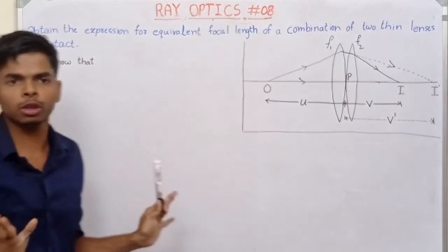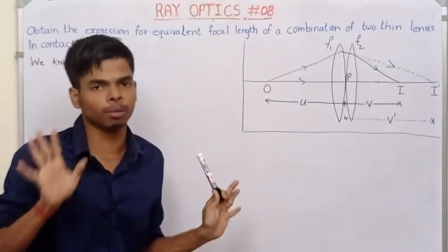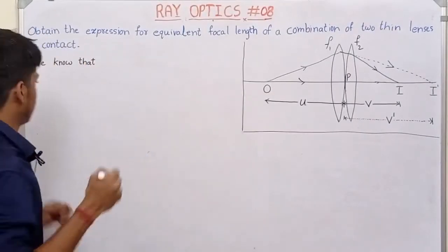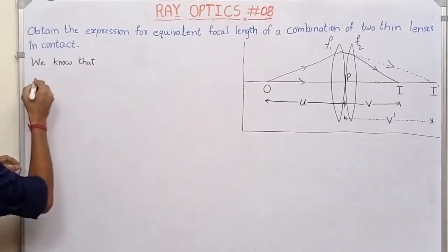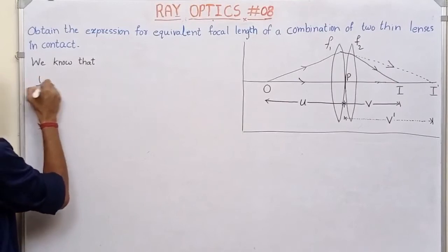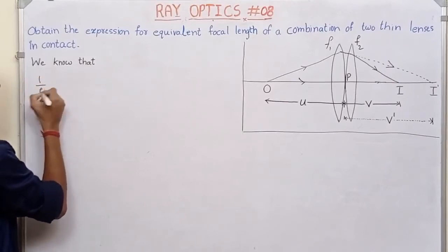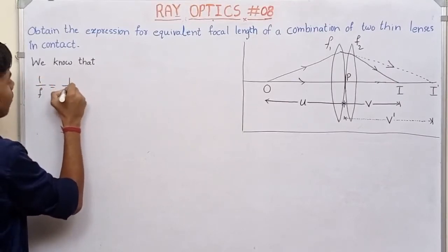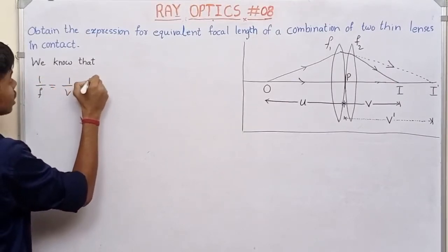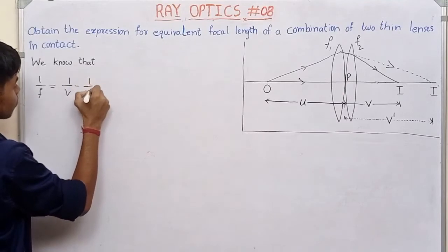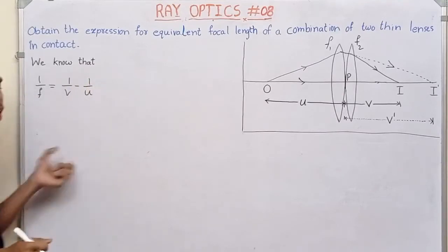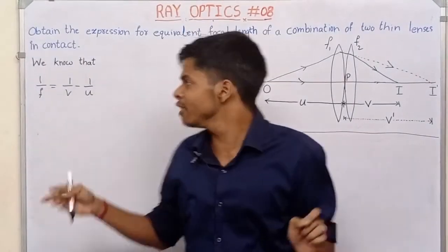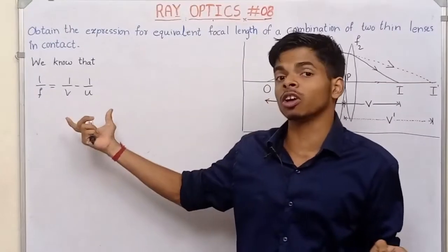We know that, and the bari yodhu. For this, one formula is needed. The formula, when you look at it, is: 1 by f is equal to 1 by v minus 1 by u. This formula you need to memorize.